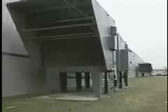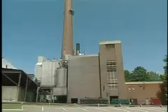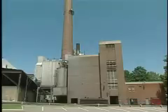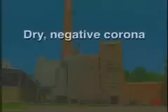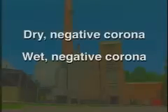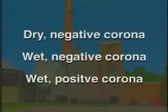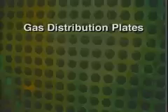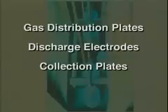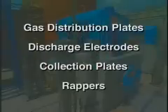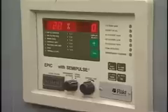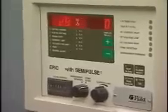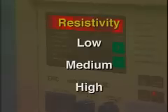To review, the common types of electrostatic precipitators that capture air pollution are dry negative corona, wet negative corona, and wet positive corona. Components of ESPs include gas distribution plates, discharge electrodes, collection plates, and rappers. The capture efficiency a device has in collecting particles is controlled by various operating conditions that affect resistivity in ranges considered low, medium, or high.